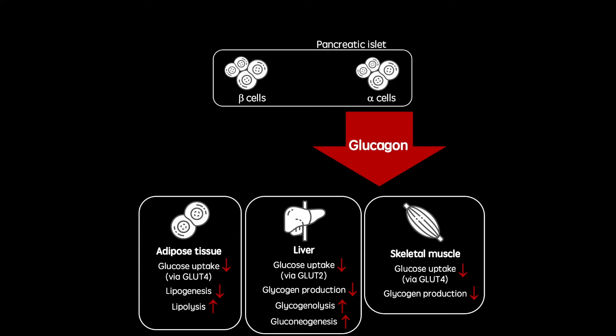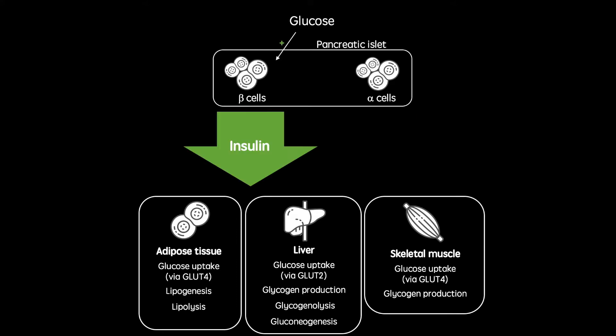These effects include inhibiting glucose uptake by bodily tissues as well as the breakdown of storage molecules to generate glucose. However, when glucose is being absorbed by the gastrointestinal tract, usually shortly after a meal, beta cells are stimulated to secrete insulin. As well as inhibiting the secretion of glucagon and therefore inhibiting all of its effects, insulin acts in a variety of tissues all working to reduce blood glucose concentration. These effects include increasing glucose uptake as well as increasing the production of storage molecules.